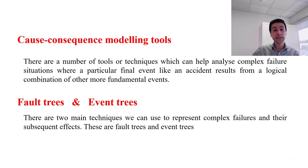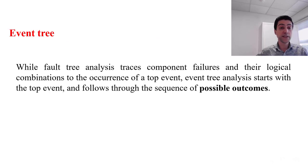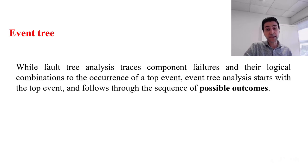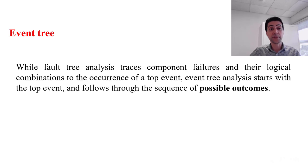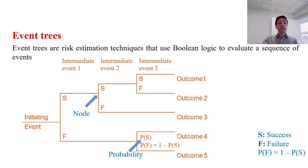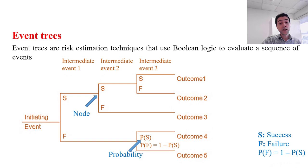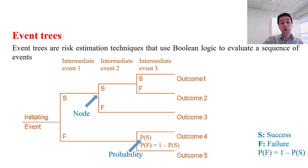Two important tools under cause-consequence modeling are fault trees and event trees. Event trees trace the component failures of a complex system and consider logical combinations that can exist to follow through the sequence of possible outcomes. Event trees use Boolean logic, so there are two branches for each event: S stands for success and F for failure. The probability of failure is one minus the probability of success, and we can form event trees using this Boolean logic.